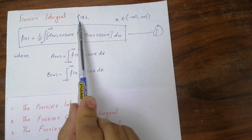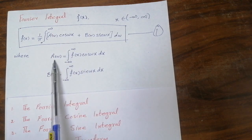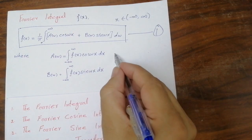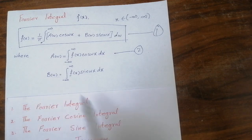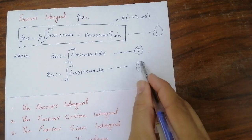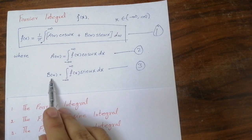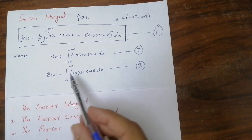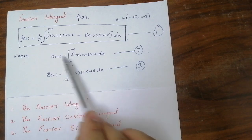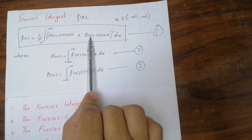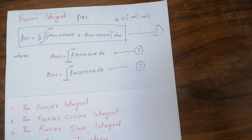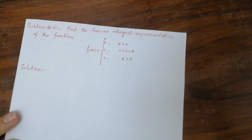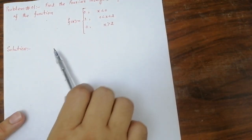So if we are given a function f(x), we have to obtain the value of a(w) from formula 2, and the value of b(w) from formula 3. Then we have to put these two values into equation 1, and that will be our required solution. Let us see an example — problem number 1.